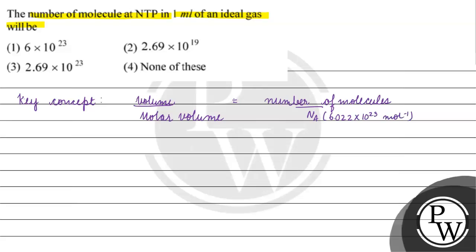If we talk about molar volume, molar volume is basically equals to 22,400 milliliters. Right?